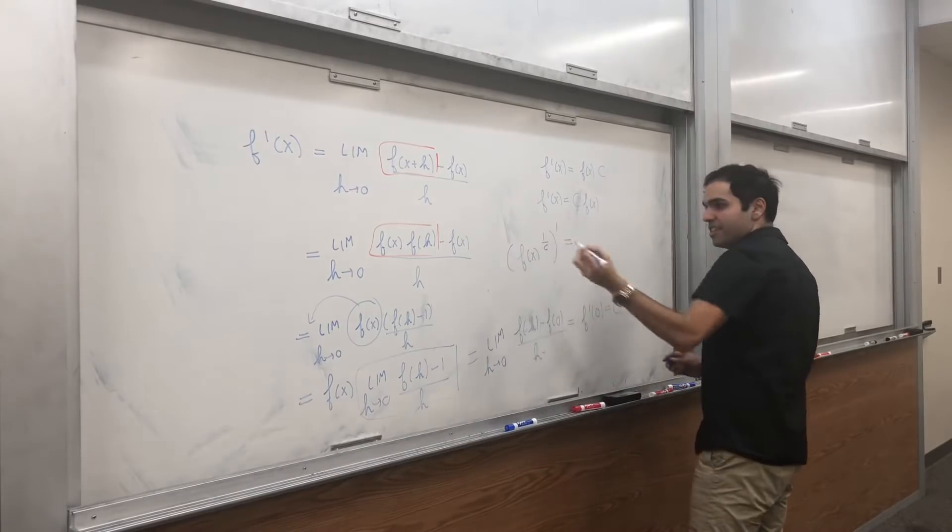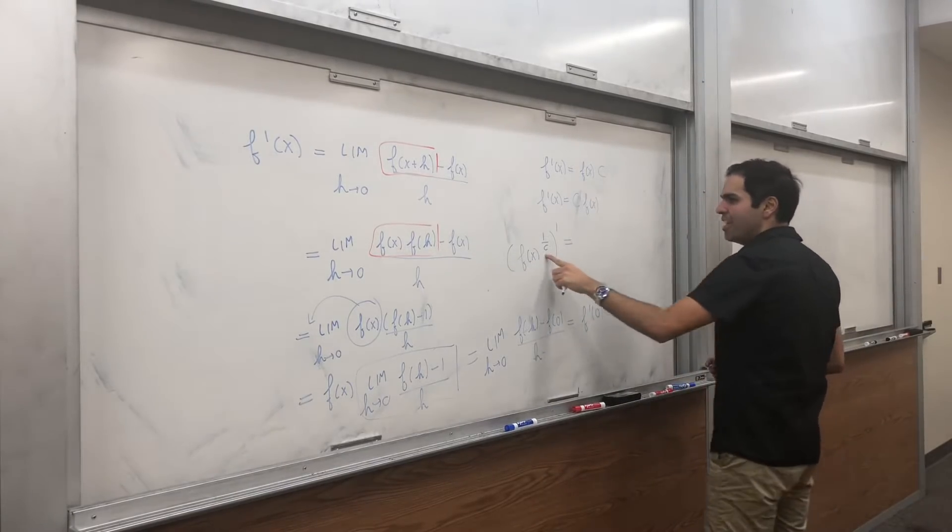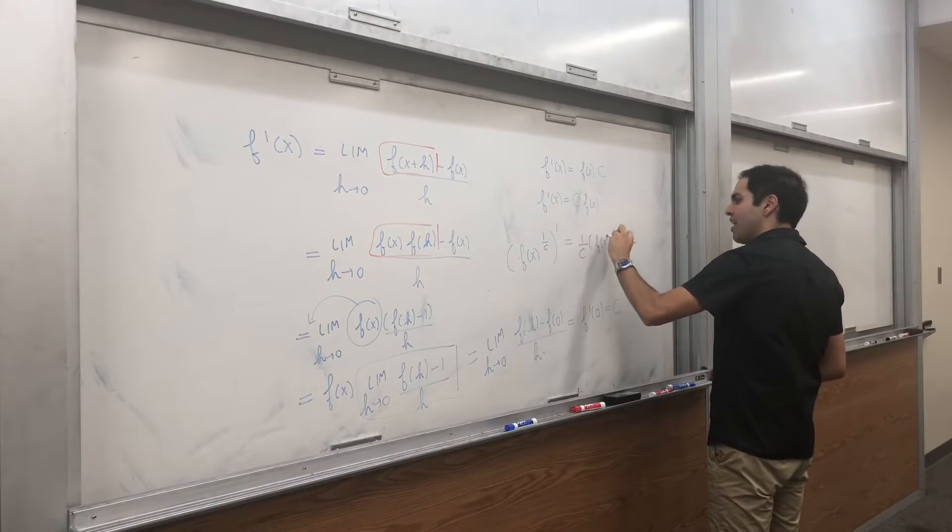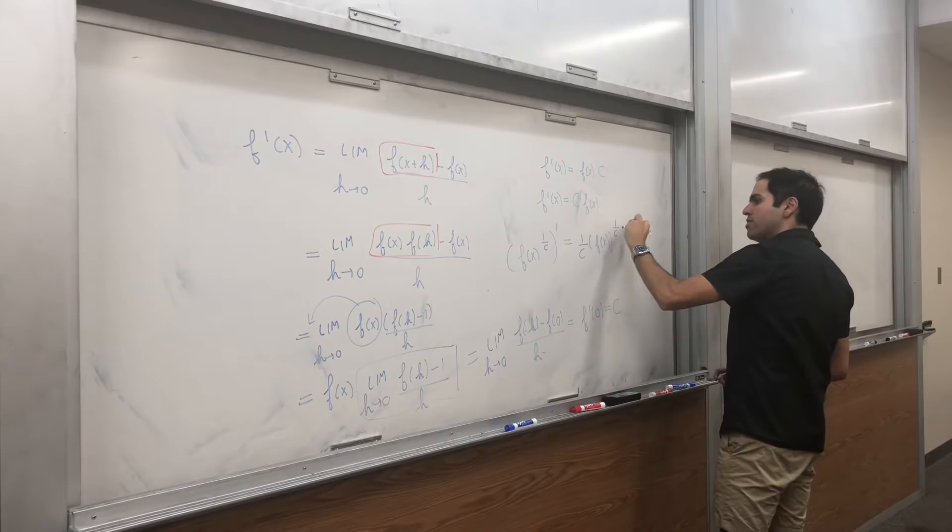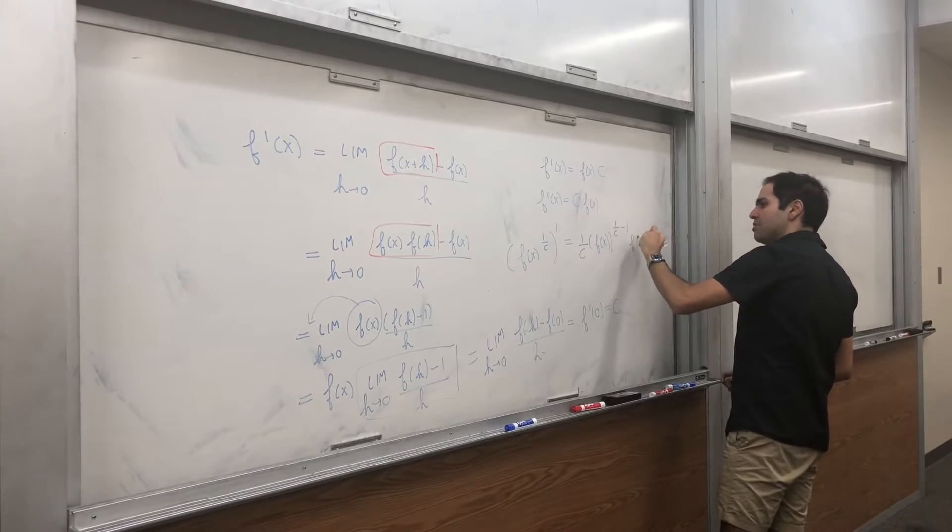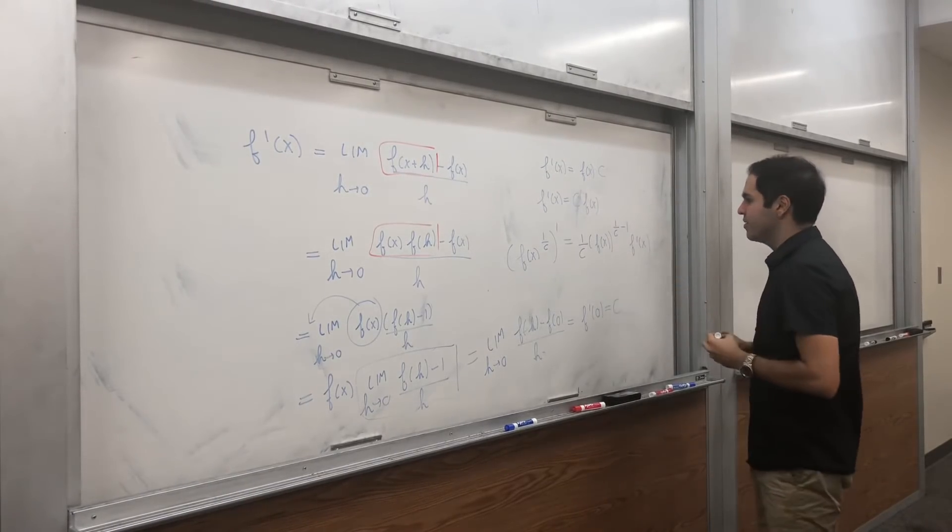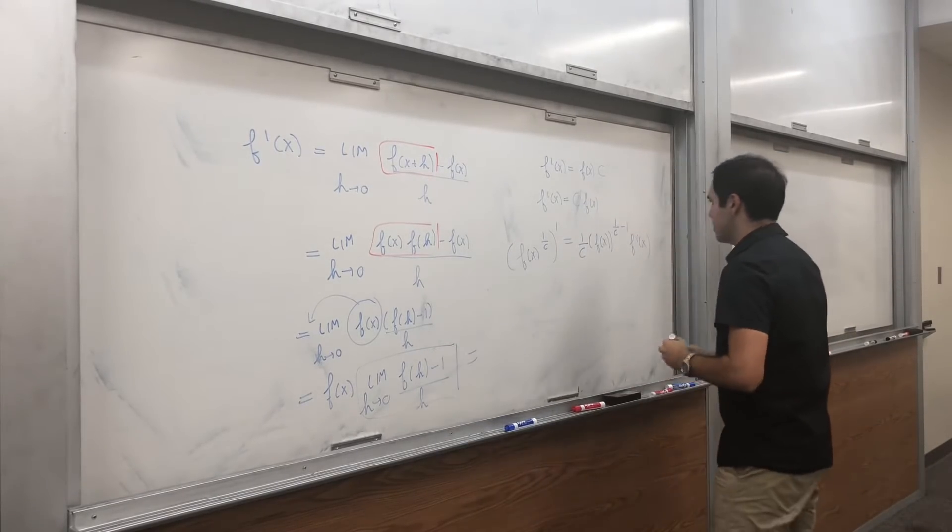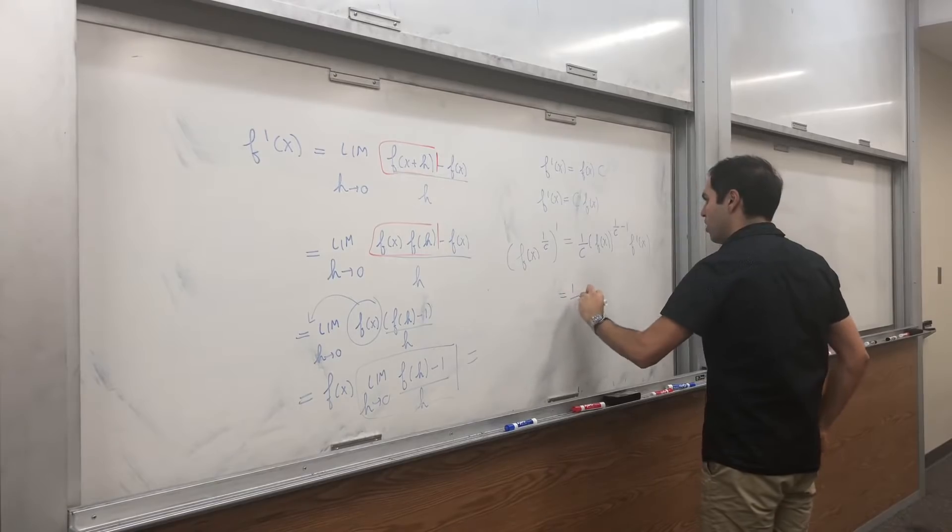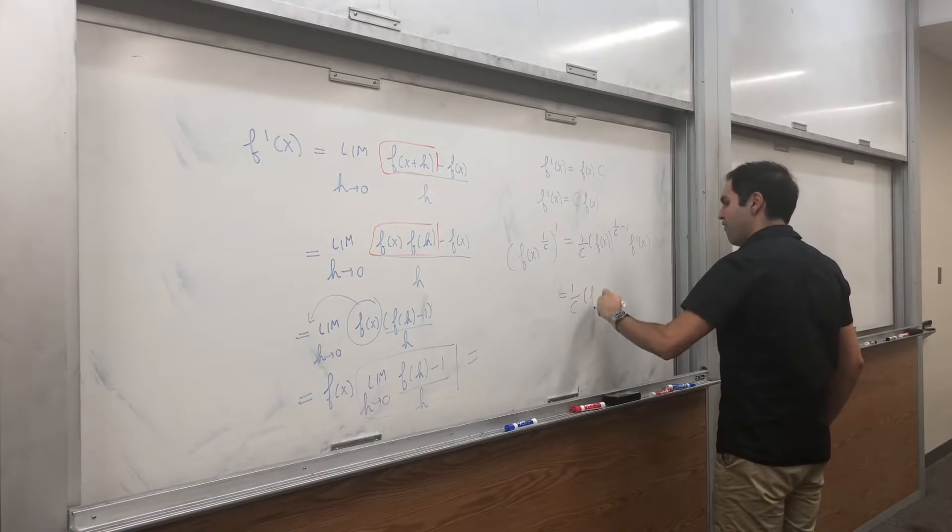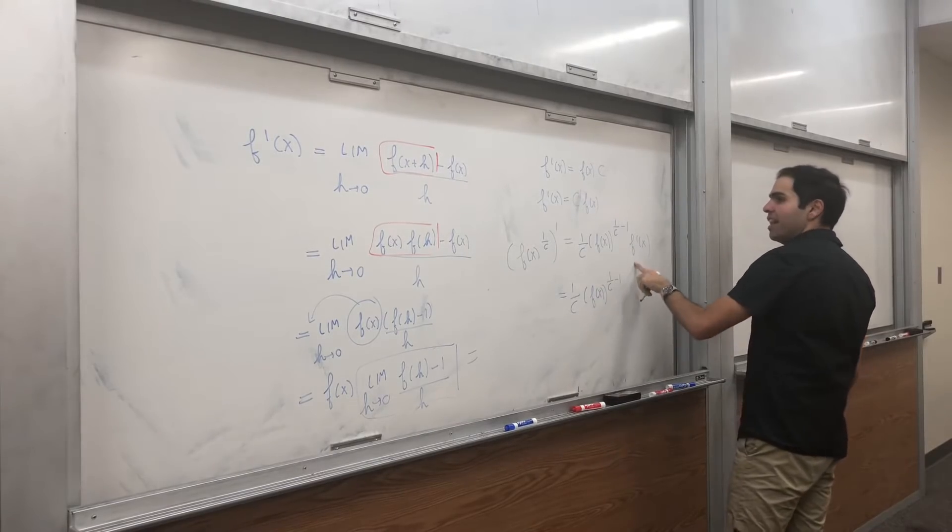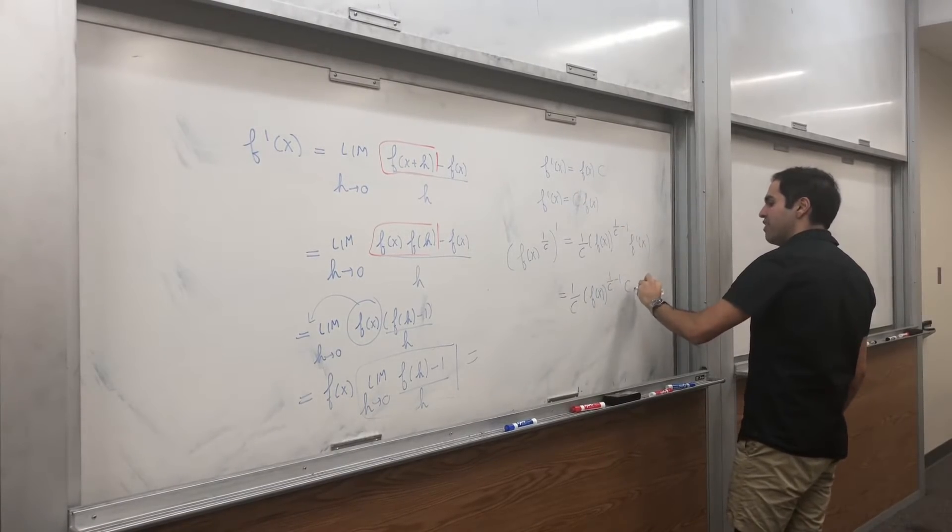And let's differentiate that. Then we get 1 over c f of x to the 1 over c minus 1 times f prime of x. And then what this becomes is 1 over c f of x, 1 over c minus 1. And then f prime is just c f of x.